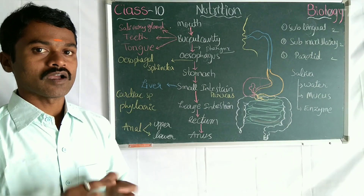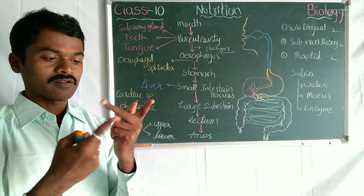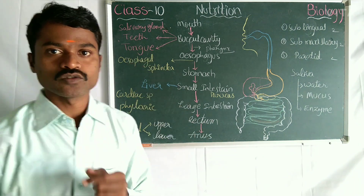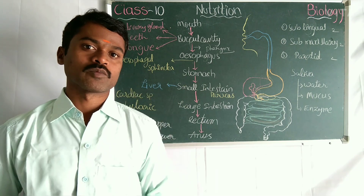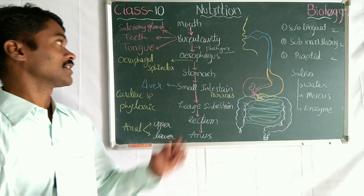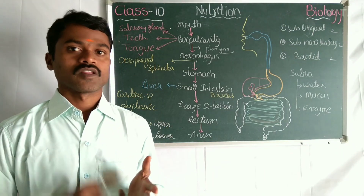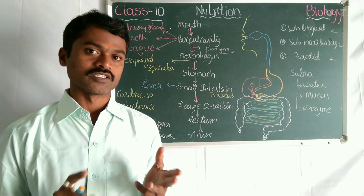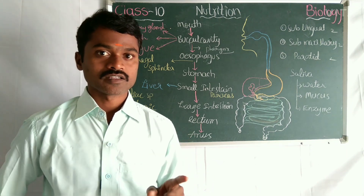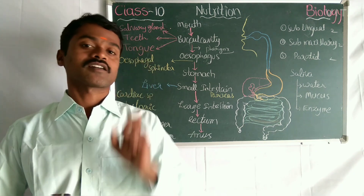Now let's come to the tongue. We use the tongue to communicate using words. In relation to the digestive system, the tongue is useful for tasting food. The longest and strongest muscle is the thigh muscle, but the tongue is the small and strongest muscle in the body.